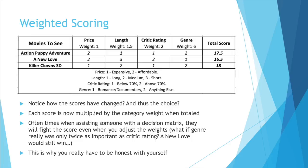Notice how the scores changed? They were 6, 8, and 6 before. Now they're 17.5, 16.5, and 18. So before, A New Love won — now, Killer Clowns 3D wins.